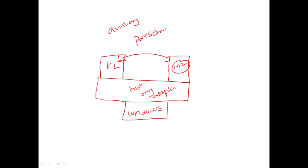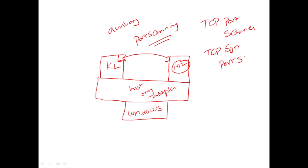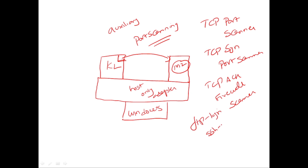What we are going to see is how to use auxiliary modules for port scanning. The objectives include: TCP port scanner, TCP SYN port scanner, TCP ACK firewall scanner, FTP login scanning, and SSH version scanning. We'll be scanning the victim machine running Metasploitable 2 using the auxiliary modules of Metasploit Framework.